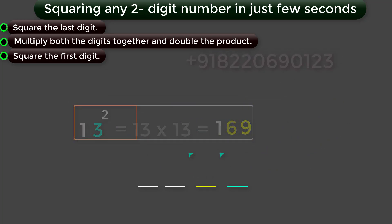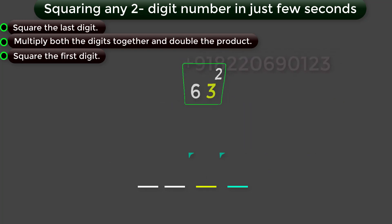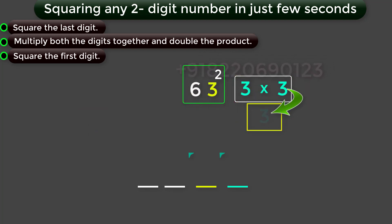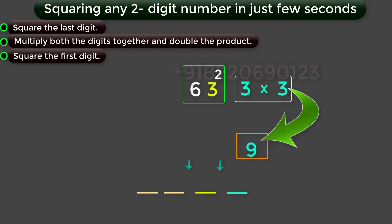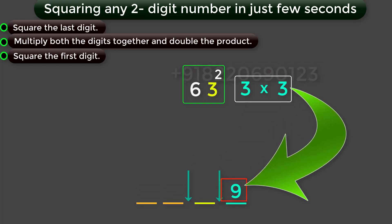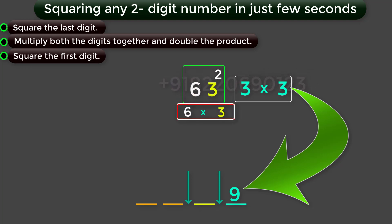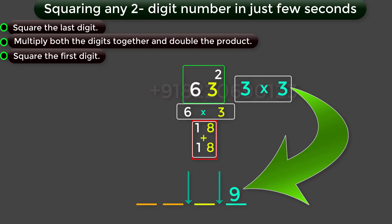Let us take another example: 63 squared. Find the square for the last digit 3, you will get 9. Next, multiply both digits 6 and 3 together, you will get 18. Then, double this number 18, you will get 36.